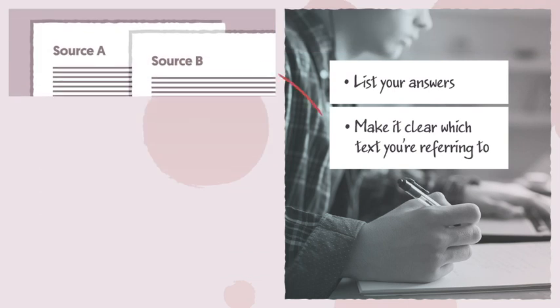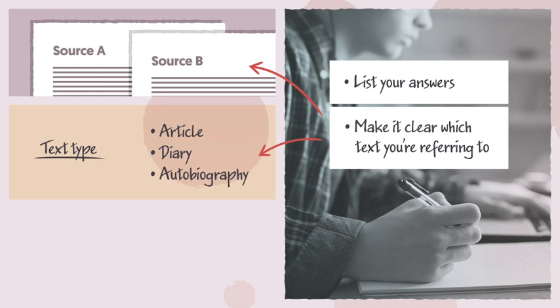You can do this by stating the source it's from, Source A or Source B, the text type, such as article, diary or autobiography, or using the writer's last names.